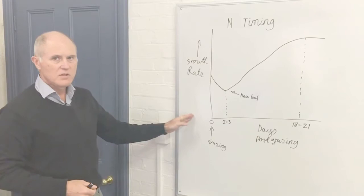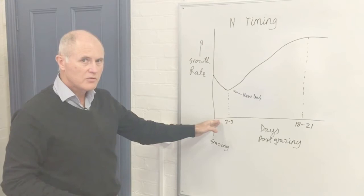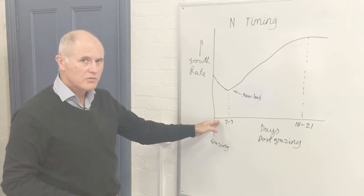So to summarize, the ideal time to put on nitrogen is as close to grazing as possible, as soon after grazing as possible. But if you have to compromise, you can apply it two to three days before or after grazing.